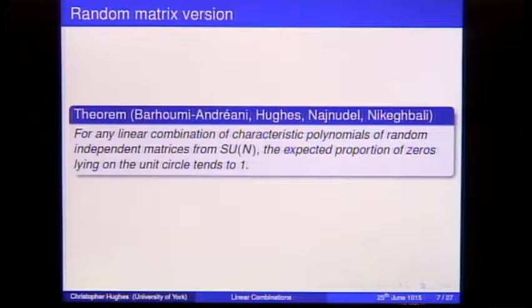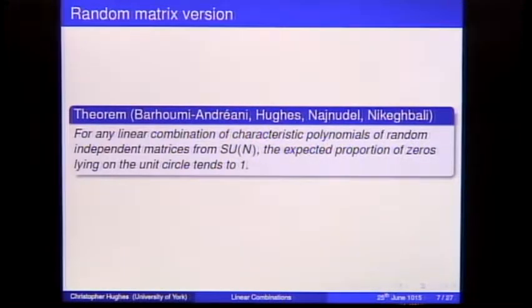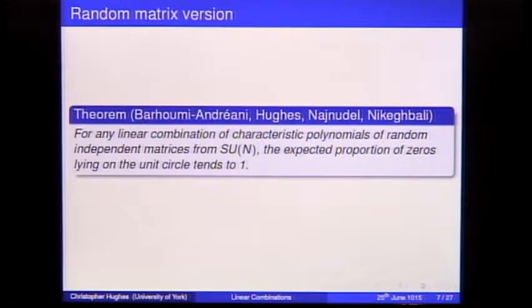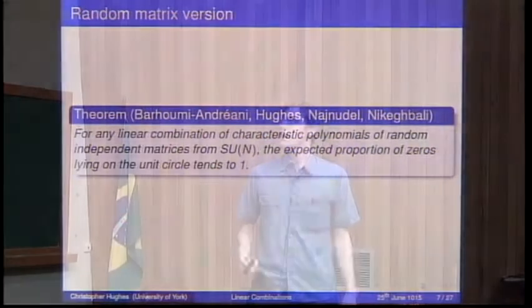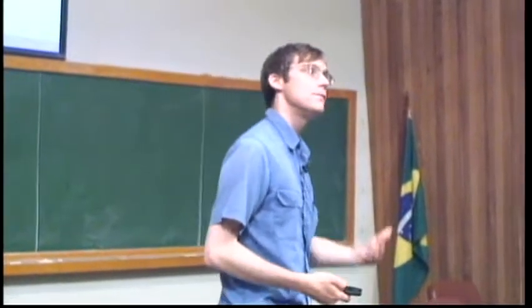Characteristic polynomials are a good model for values of the Riemann zeta function in the T aspect. So can you do the same calculation that Bombieri and Hejhal did for linear combinations of L-functions, but for linear combinations of random matrices? You can. In a paper with Yasin Bahoumi, Joseph Najnudel, and Ashkan Nikeghbali, published in March this year, we show: take a linear combination of characteristic polynomials with the same functional equation — requiring the same determinant — and the expected proportion of zeros on the unit circle converges to one as matrix size tends to infinity.